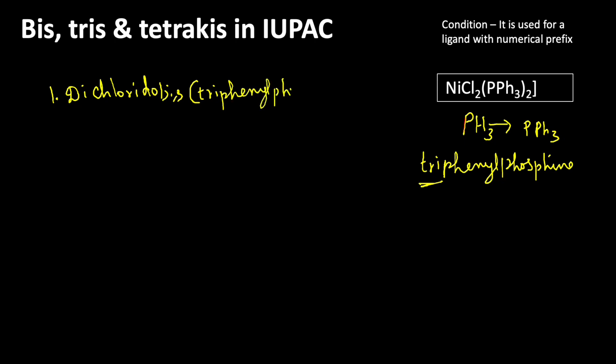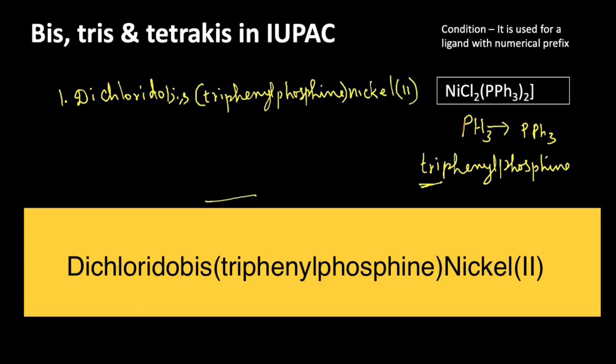After that, the central ion is nickel. Nickel is in the +2 oxidation state. This is because triphenylphosphine (PPh₃) is a neutral ligand carrying no charge, while each chloride group carries a −1 charge. Therefore, nickel must carry a +2 charge to balance the overall neutral complex.